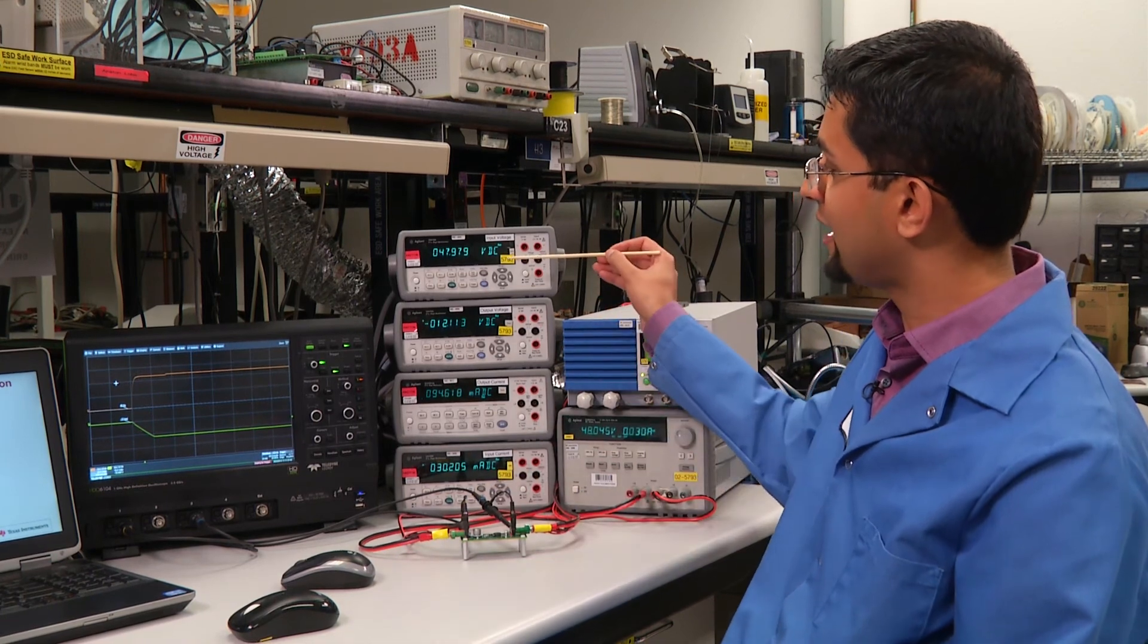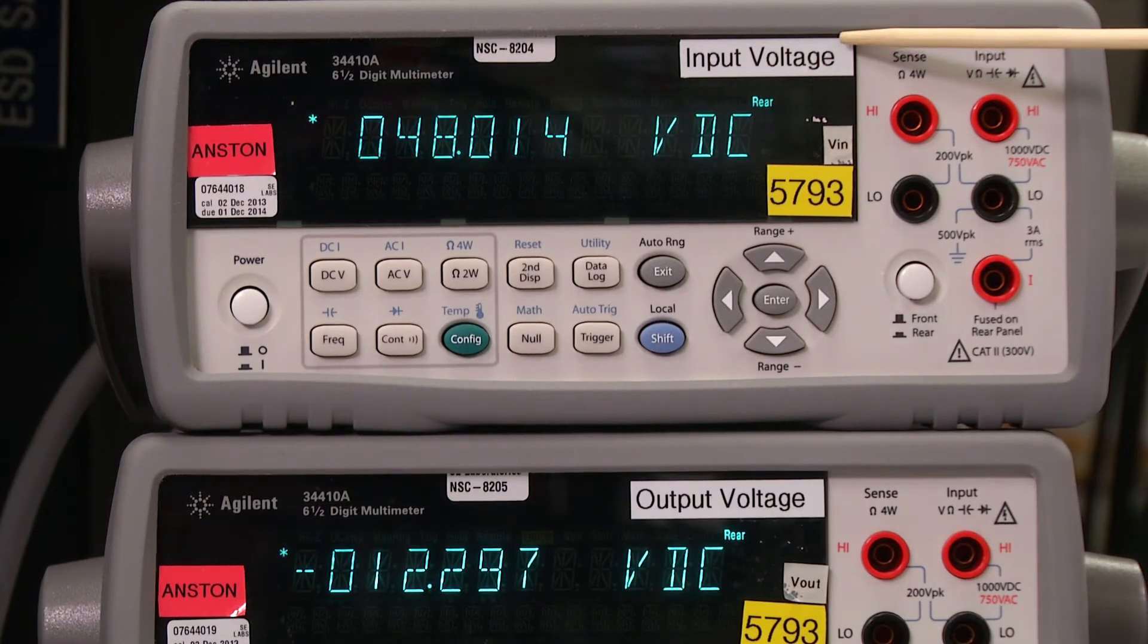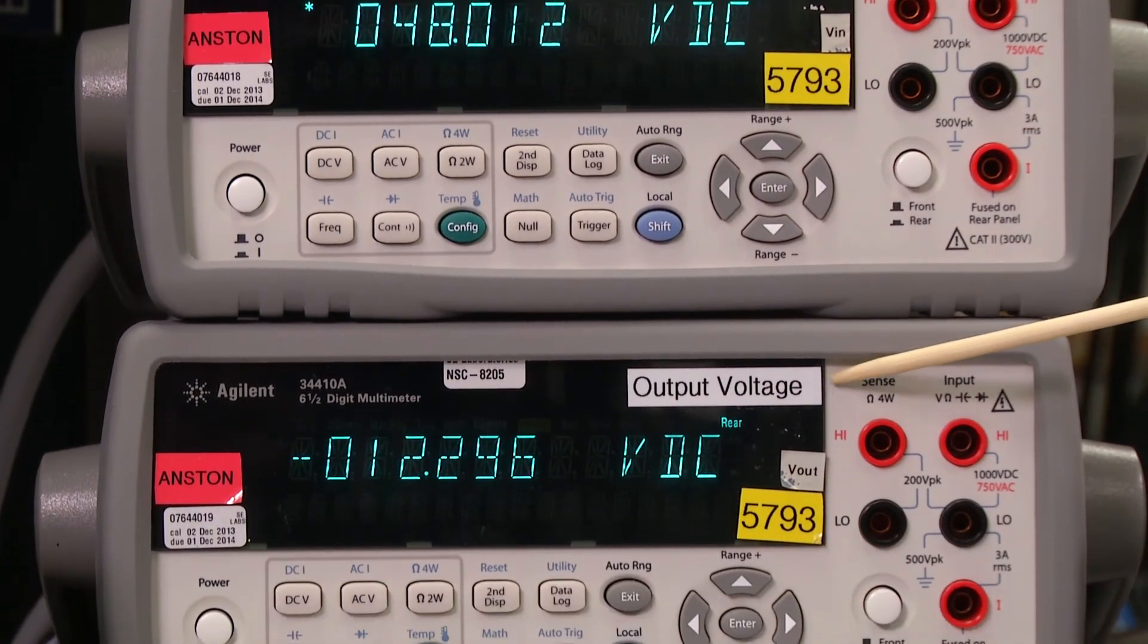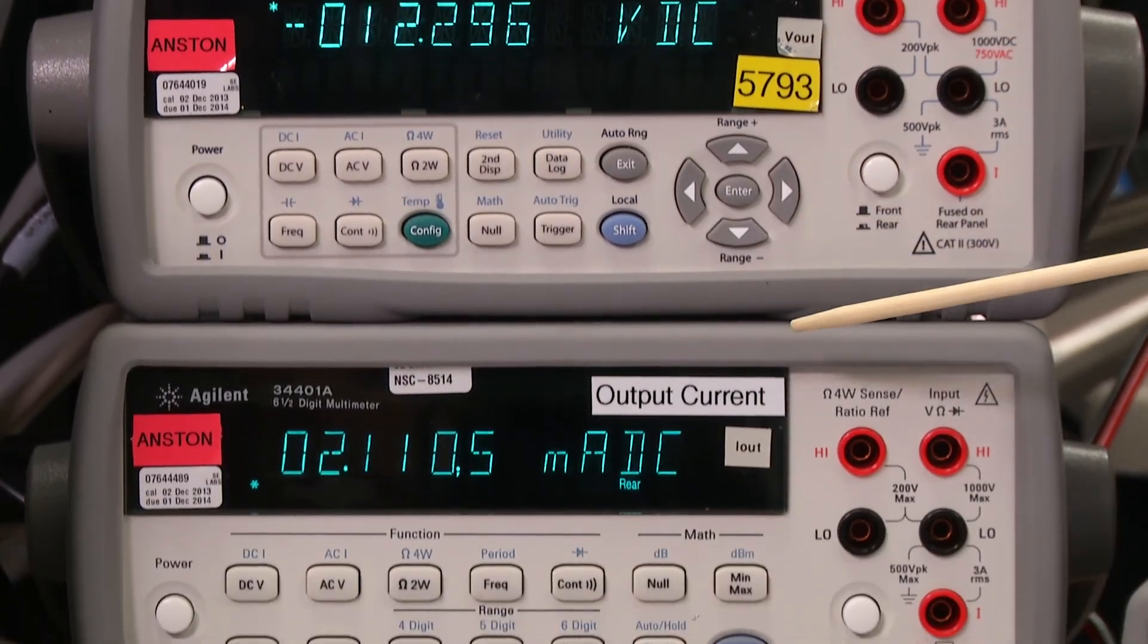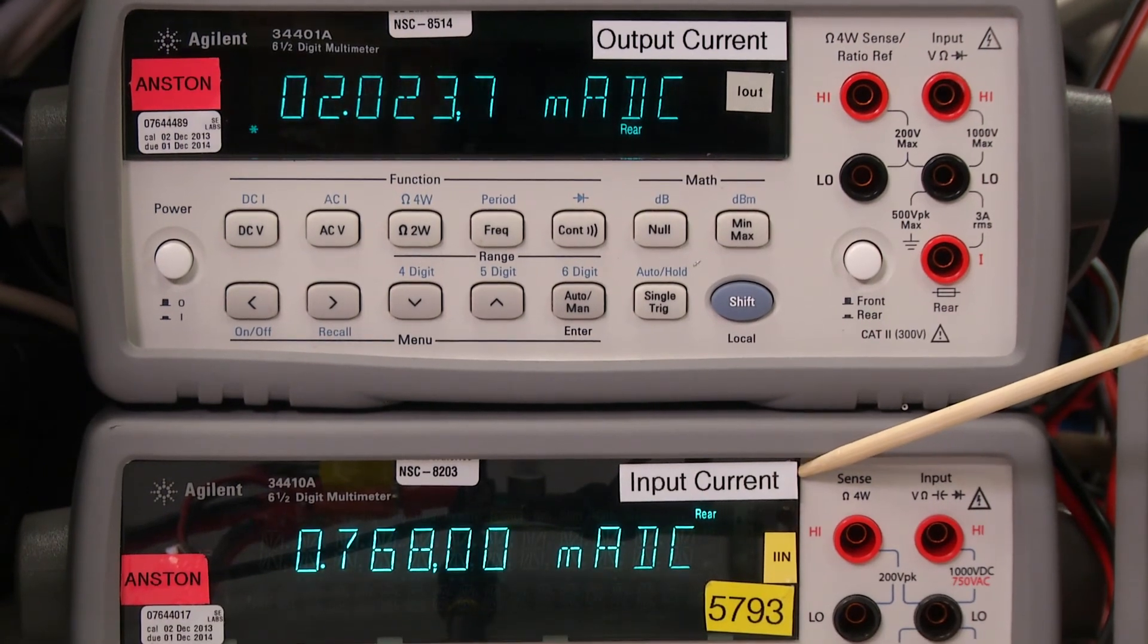Let's take a look at our meter readings. As you can see, the input voltage meter reads 48 volts. The output voltage meter reads minus 12. And down below, the output current and the input current meters show that there is no load present.